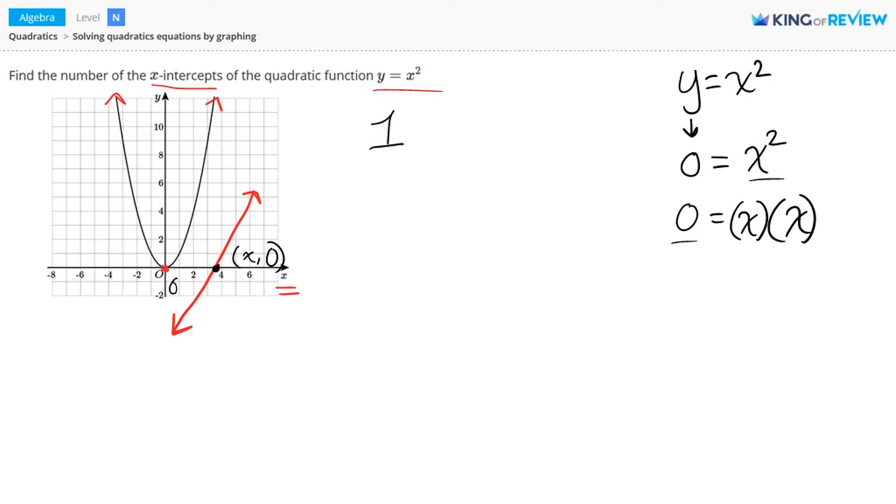Now in order to get zero for the answer here, one of these terms must be equal to zero. We know this from the zero product property. If you have two numbers that you multiply together to get zero, either a or b must be zero here in order to get zero for the answer. So we could have a times zero equals zero, or zero times b equals zero. So in our problem, we know that either this term or this term must be zero to get zero for the answer.